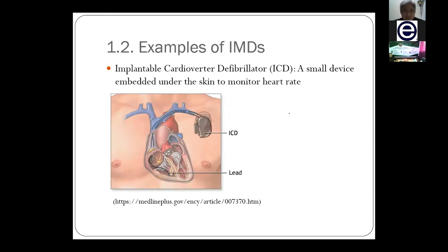The second IMD is the implantable cardioverter defibrillator, known as an ICD. This is an enhanced version of the pacemaker, designed for patients with more critical heart problems — especially those whose heartbeat may stop at any time or place. Doctors would advise these patients to install or embed an ICD near the heart. This ICD can jumpstart the heart once it stops and also regulate the rhythm of the heartbeat, so it has the functions of a pacemaker as well.